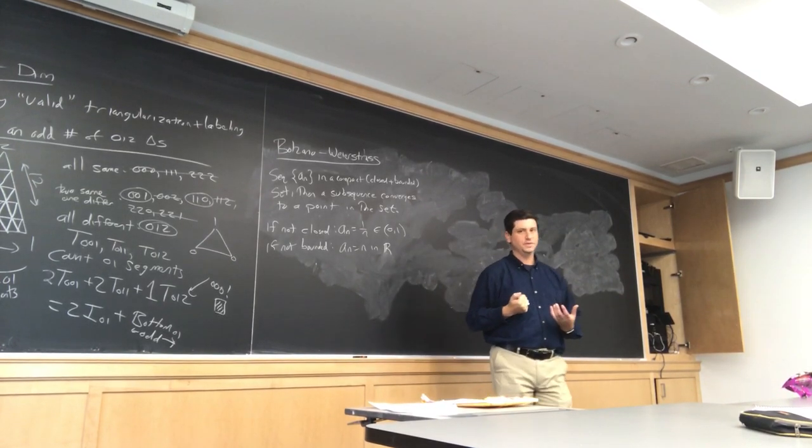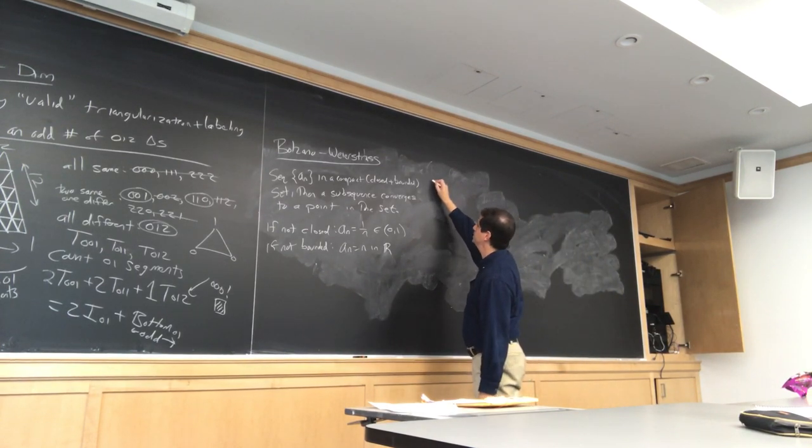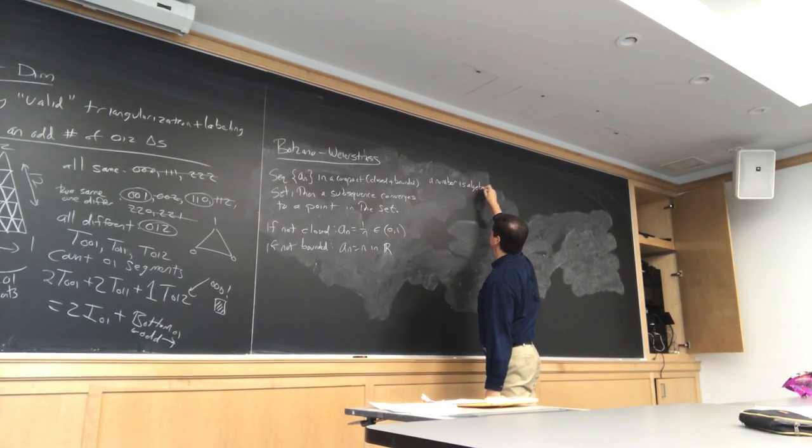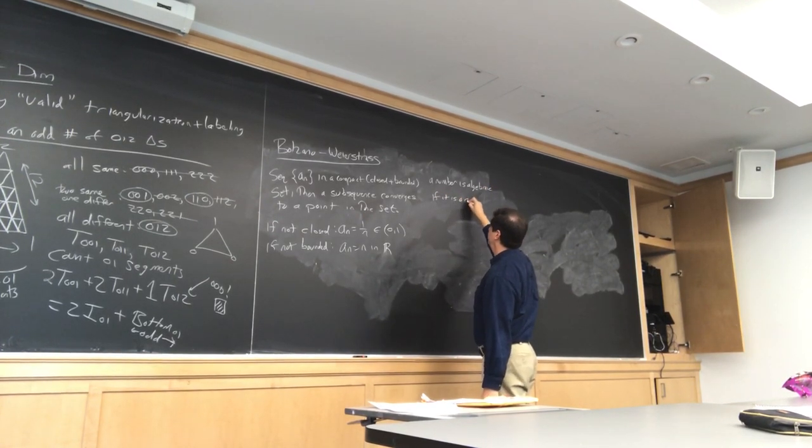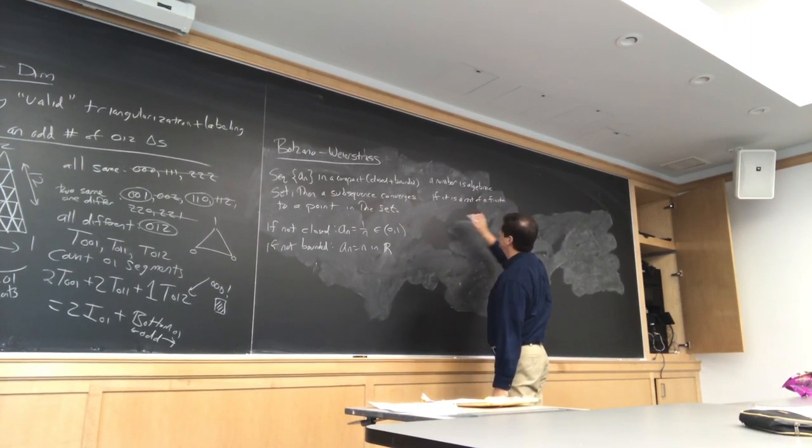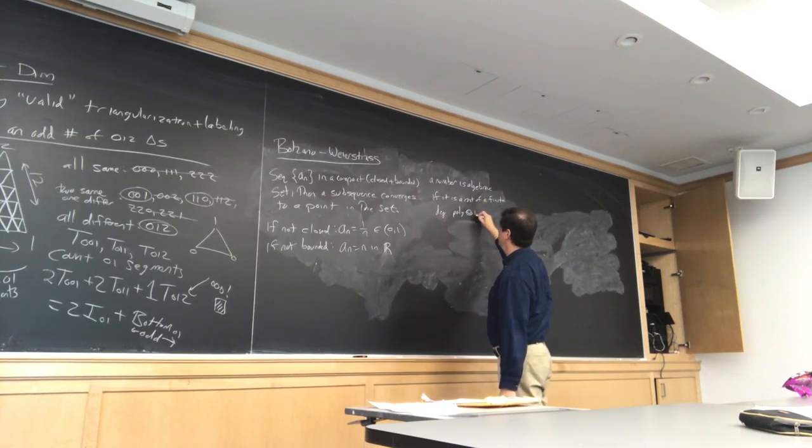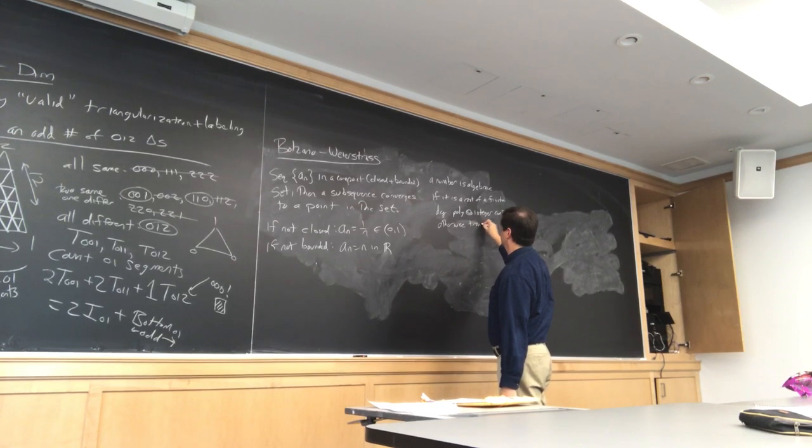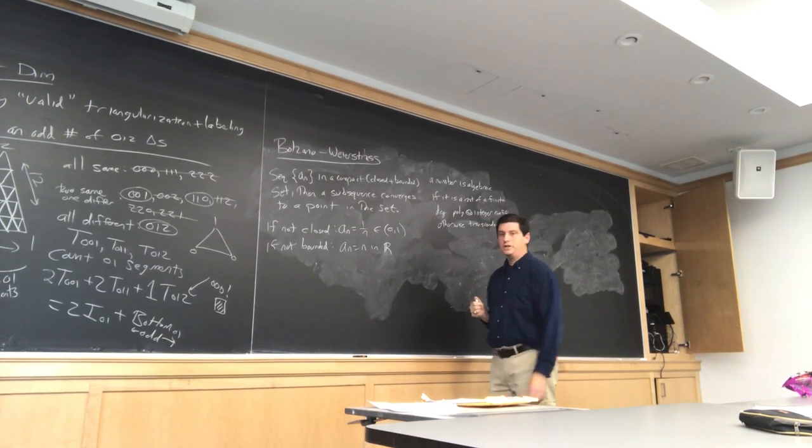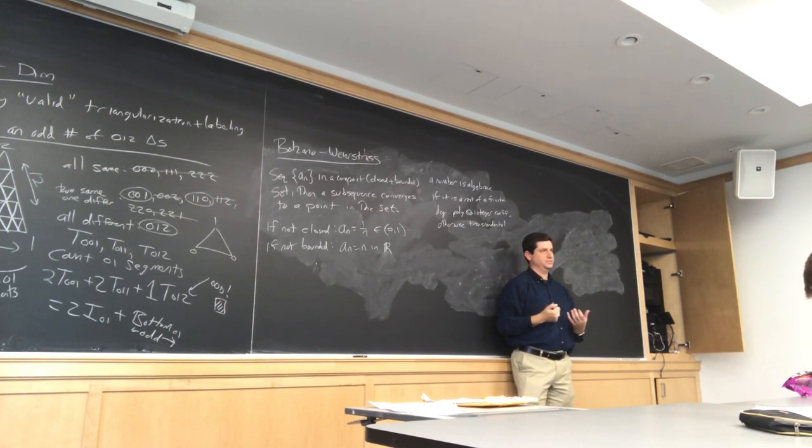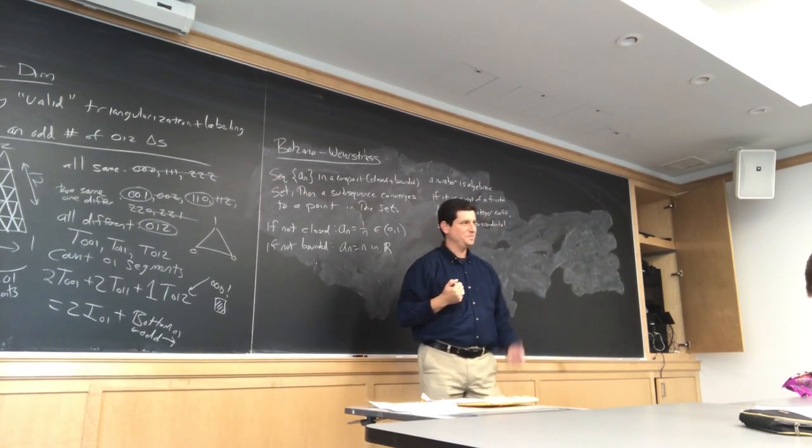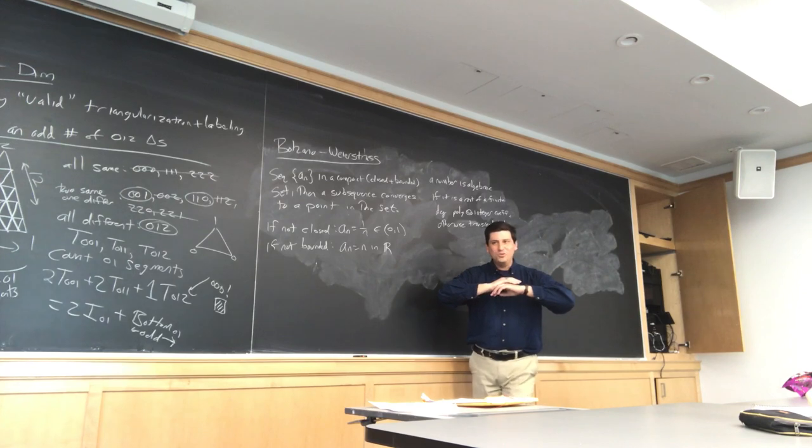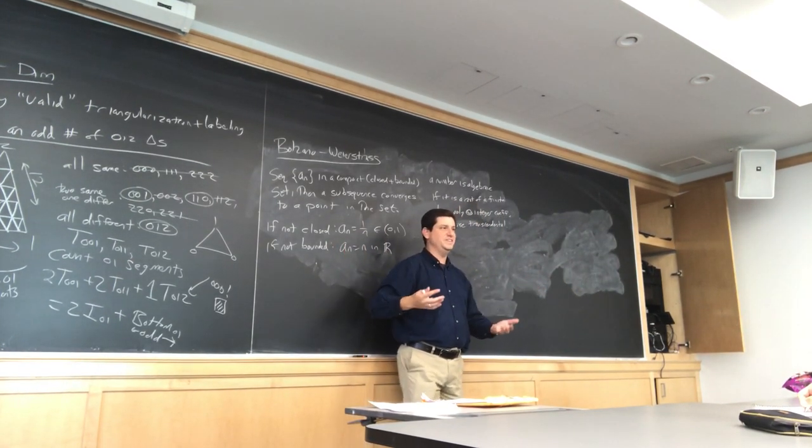Okay? So if we remove conditions, the result can be false. As an aside, here's one of my favorite results. So a number is algebraic if it is a root of a finite degree polynomial with integer coefficients. Otherwise, it's transcendental.